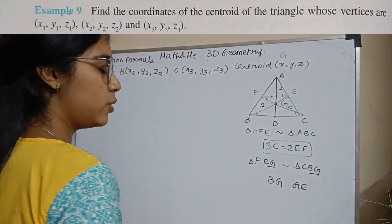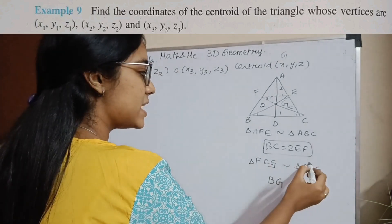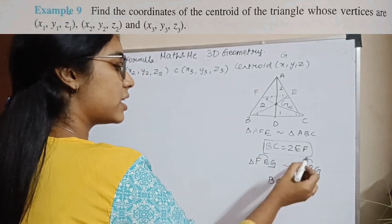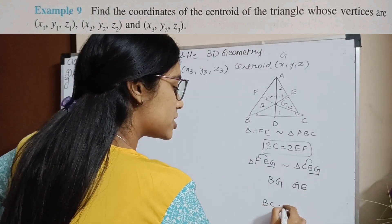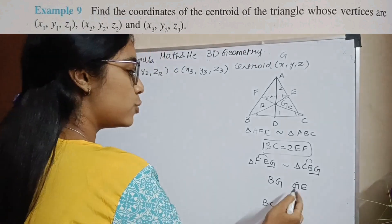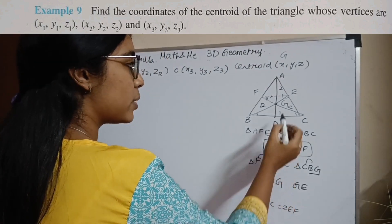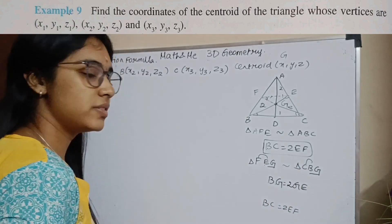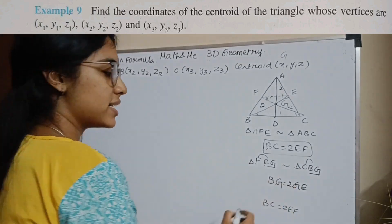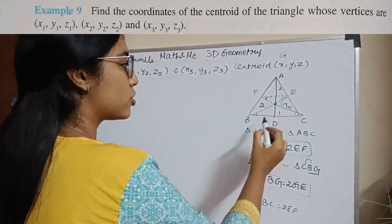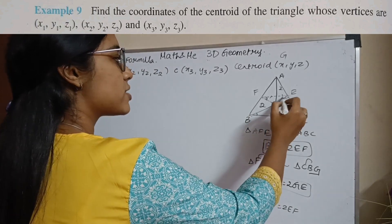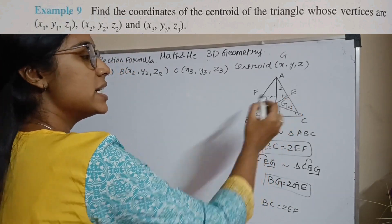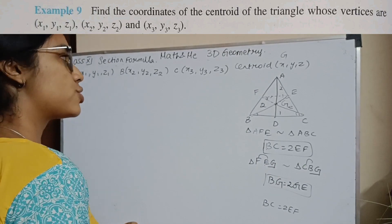From the similarity of triangles FEG and CBG, I will get the relation between BG and GE. Since BC is twice EF, BG will be twice GE, which means it divides in the ratio 2 is to 1. We prove that with similar triangles — the centroid divides the median in the ratio 2 is to 1.